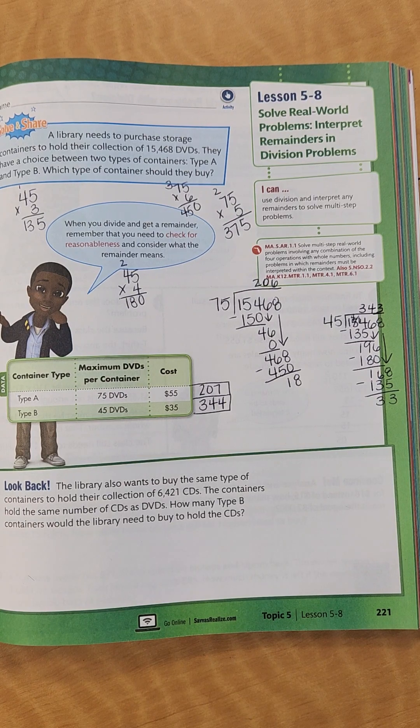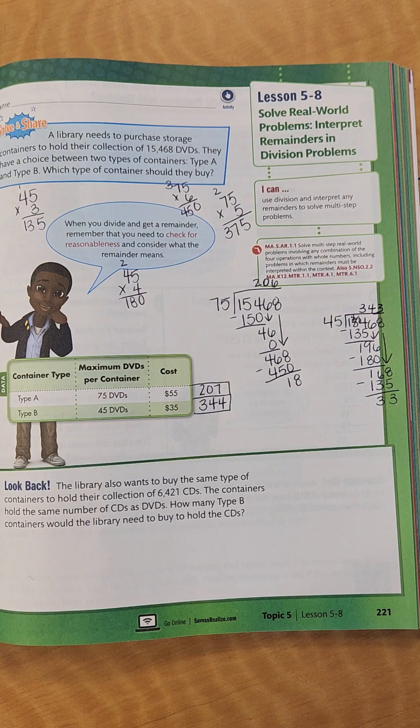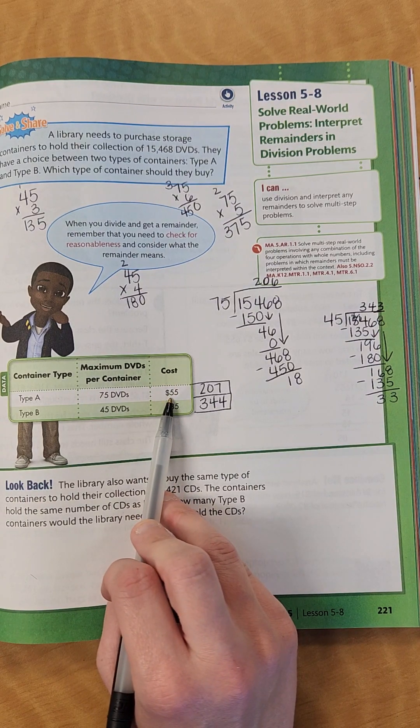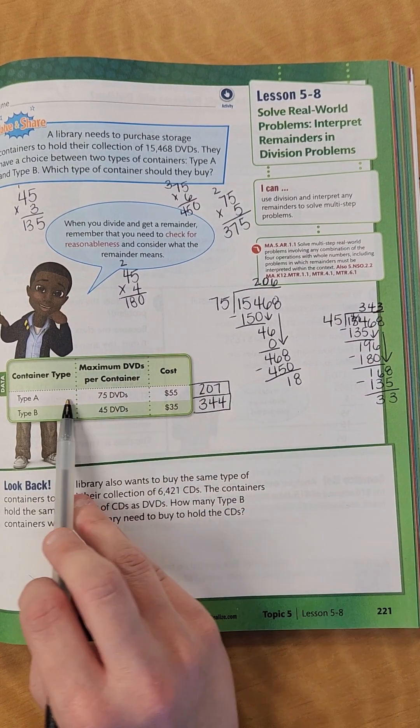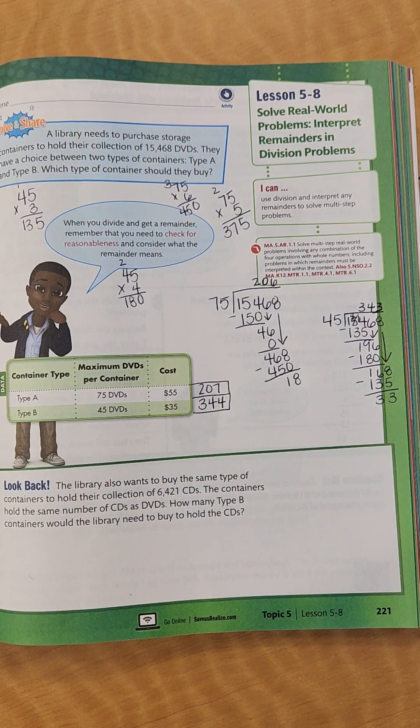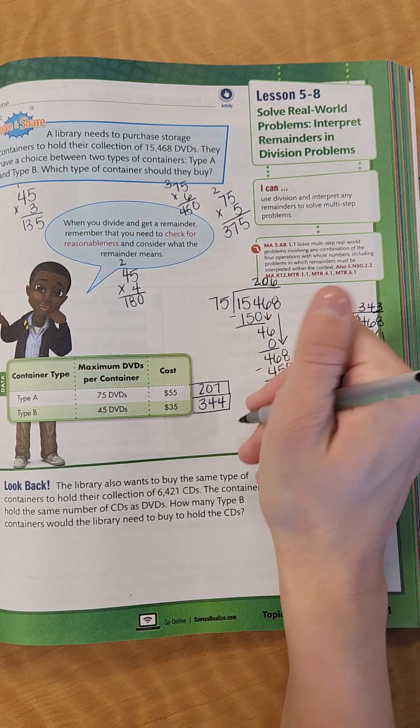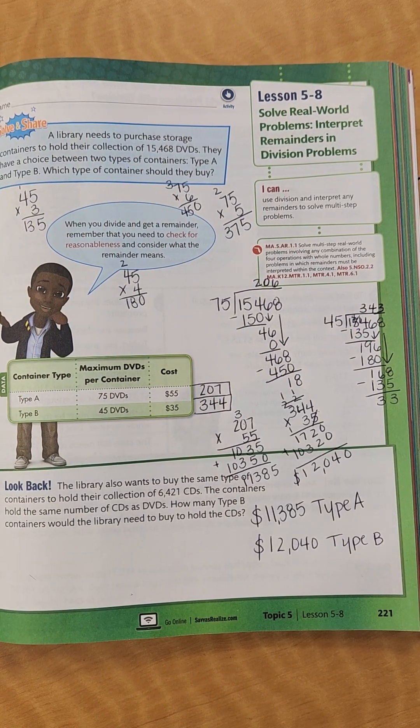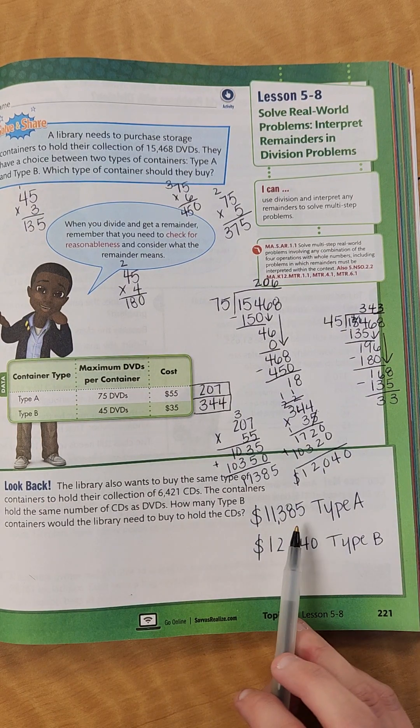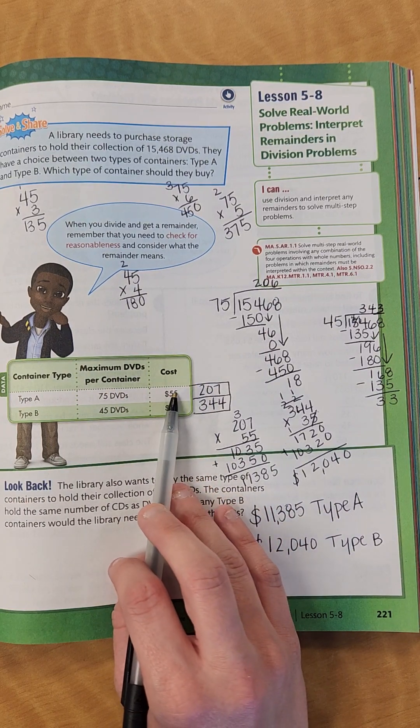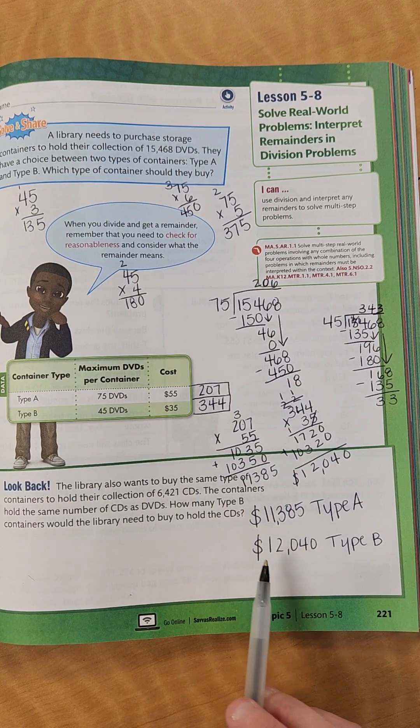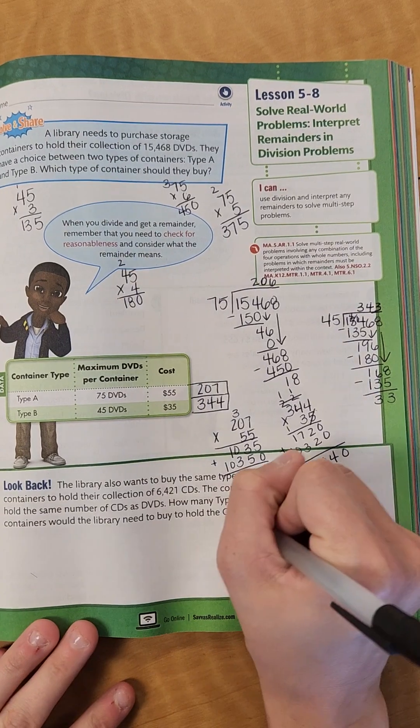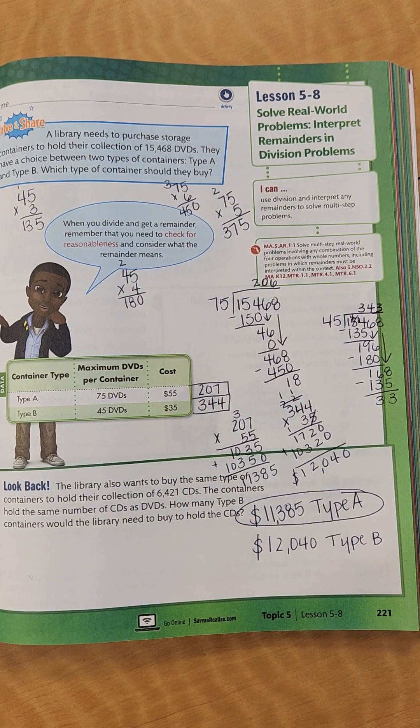Now, we are not done. We have to multiply the price of each type. We have $55 for each container, and there's 207, so we multiply to see how much it's going to cost. Then we do the same thing for type B. So I got $11,385 for Type A. If you multiply $55 times 207, you get $11,385. Same thing for B, $35 each times 344, you get $12,040. So type A would be the one you would choose because you want the cheaper option.